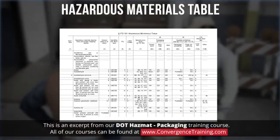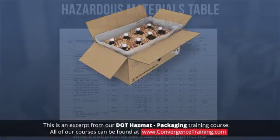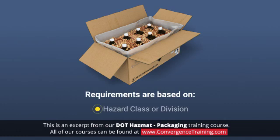The Hazardous Materials Table, or HMT, in Section 172.101 of the HMR can be used to determine the non-bulk and bulk packaging requirements and any conditions for packaging exceptions for hazardous material shipments. These requirements are based on the Hazard Class or Division, Packing Group, if applicable, and Total Quantity of the material being shipped.